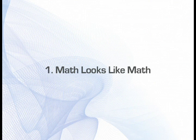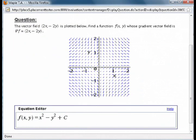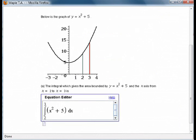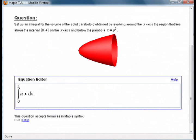Number 1. Math looks just like math. Maple TA supports the use of conventional mathematical notation in both questions and student responses. In other words, the math looks just like you would write it by hand or expect to see it in a textbook.